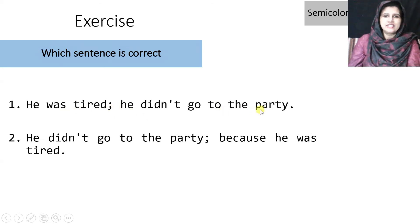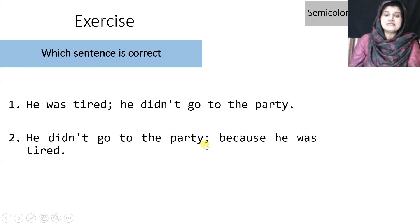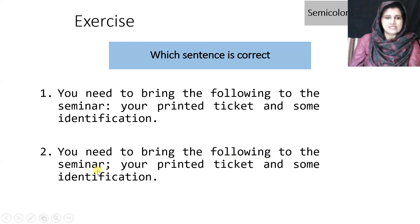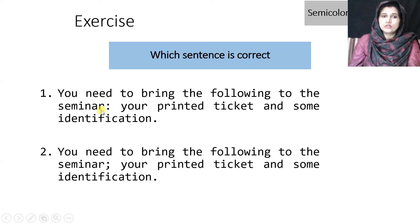Next exercise: (1) 'He was tired; he didn't go to the party.' (2) 'He didn't go to the party; because he was tired.' The first is correct because both sentences are complete independent clauses. In the second, 'because he was tired' is a dependent clause — an incomplete sentence — and we cannot join an incomplete sentence using a semicolon. Next: to introduce a list, we use a colon, not a semicolon. 'You need to bring the following to the seminar: your printed ticket and some identification.' Using a semicolon here would be wrong.